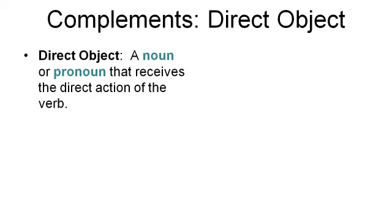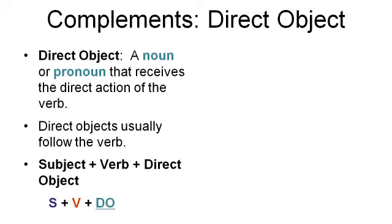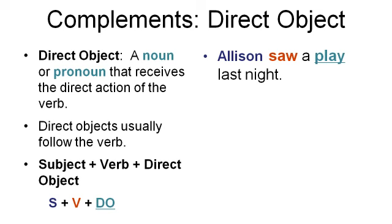Another type of complement is the direct object. Direct objects are nouns or pronouns that receive the direct action of the verb. A direct object usually follows the verb. The sentence pattern is: subject plus verb plus direct object. Notice the color coding in this sentence: Allison saw a play last night. Allison is the subject. Saw is the verb. What did Allison see? A play. Therefore, play is the direct object because it is the thing that Allison saw — it receives the direct action of the verb saw.